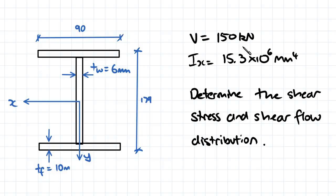So we've applied a 150 kilonewton shear force to our beam. It's got a second moment of area of 15.3 times 10 to 6, and we're going to use this information here to determine the shear stress and shear flow distribution.